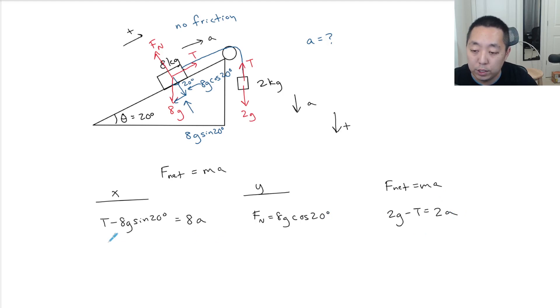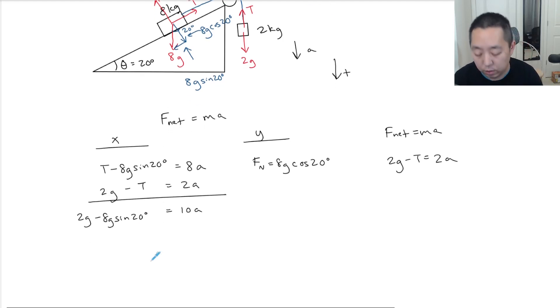So now you have these two equations and if you notice if you add them together the T's will cancel. From this equation to this equation, this becomes 10a. The T minus T cancels, I get 2g minus 8g sine 20 degrees. Now here I'd have to use a calculator to decide what is 8 sine 20 times 9.8 and then 2 times 9.8 minus that.